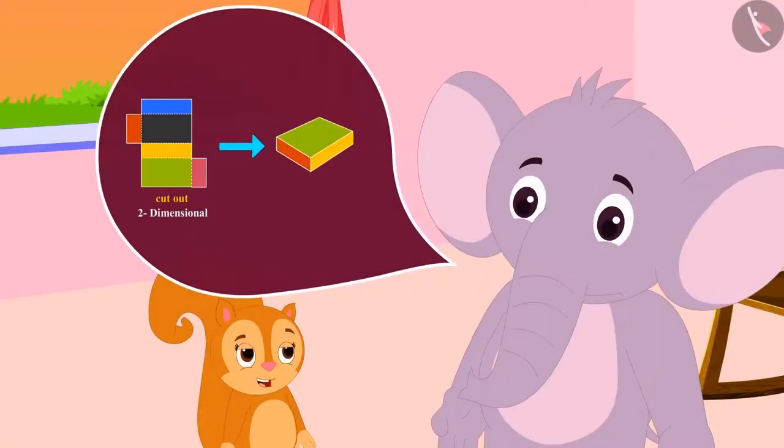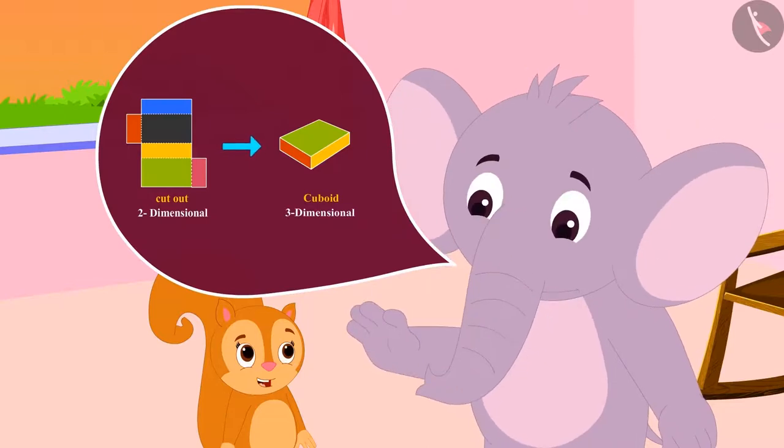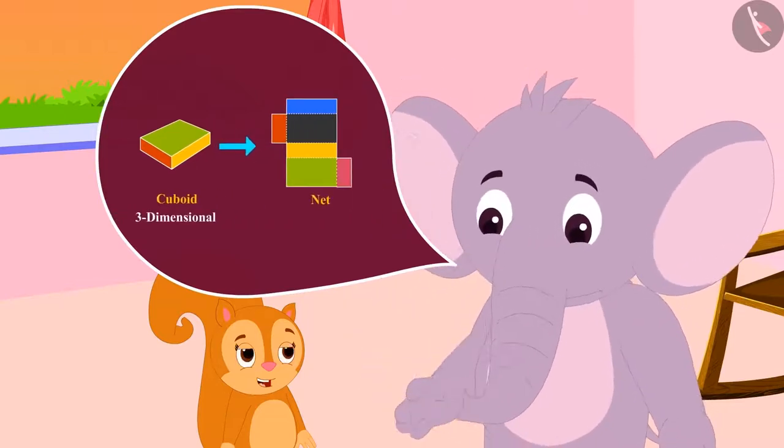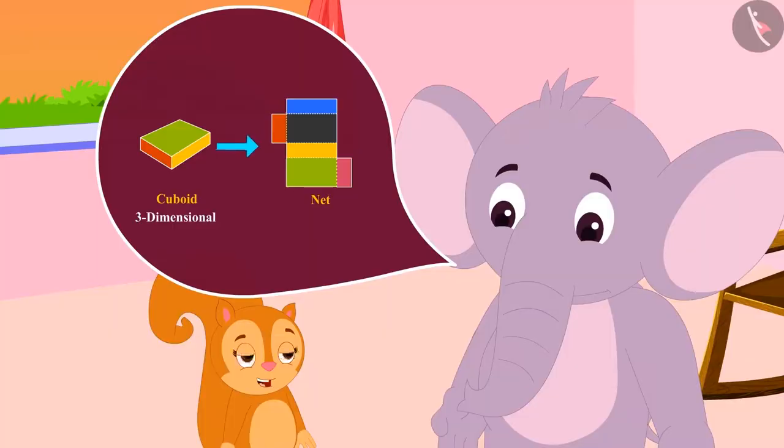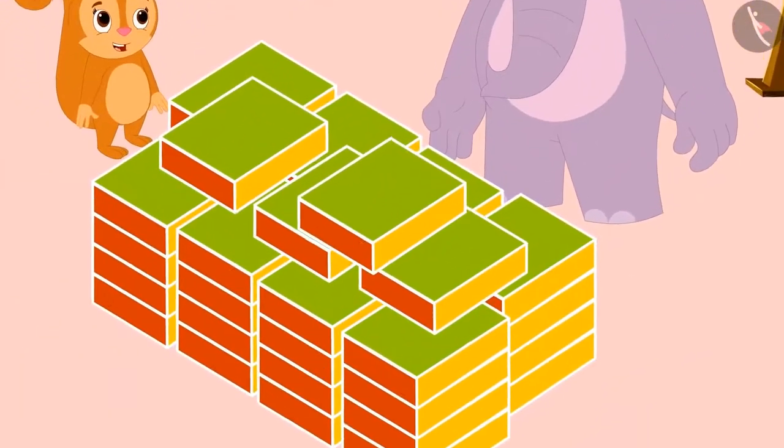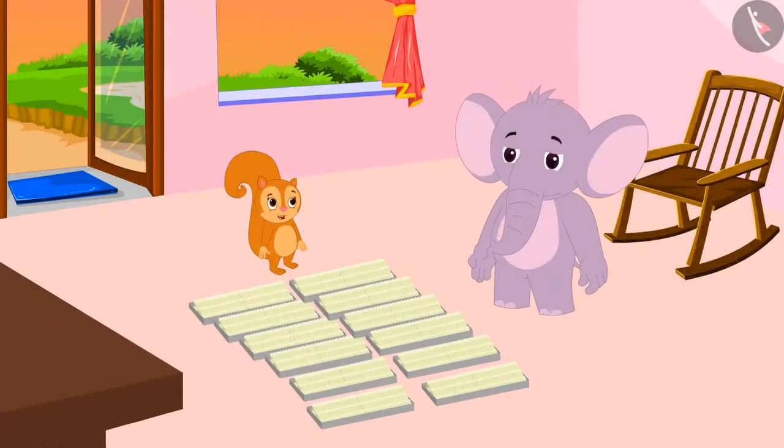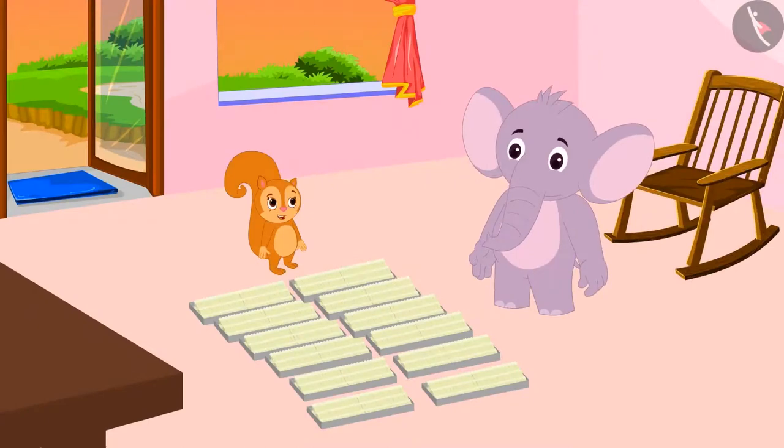Appu also explained to Chanda about the cuboid and its net. Chanda and Appu packed all the laddus. Now Appu wants to pack cashew cutli.